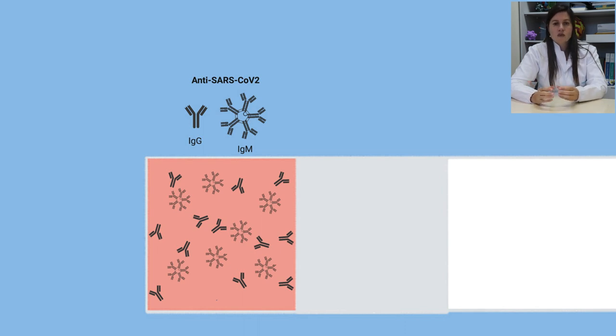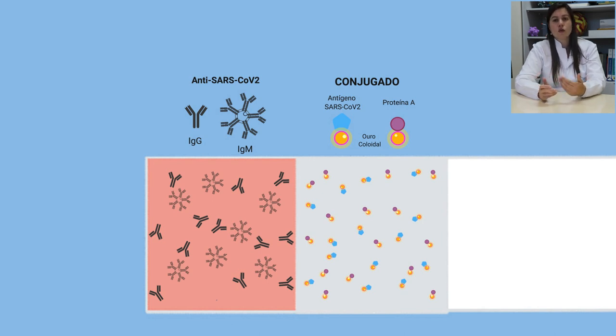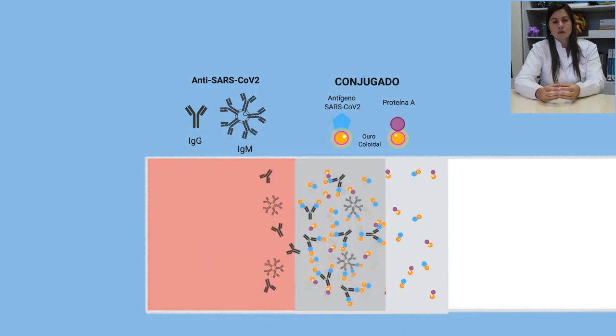Esses anticorpos migram passando pela área I, onde se inicia a ligação com o conjugado. O conjugado consiste de partículas de ouro coloidal ligadas a proteínas recombinantes do SARS-CoV-2. Durante o teste, o anticorpo específico do tipo IgM e os de tipo IgG anti-SARS-CoV-2, presentes numa amostra positiva, interagem com o antígeno conjugado e o conjunto antígeno-anticorpo migra através da membrana.